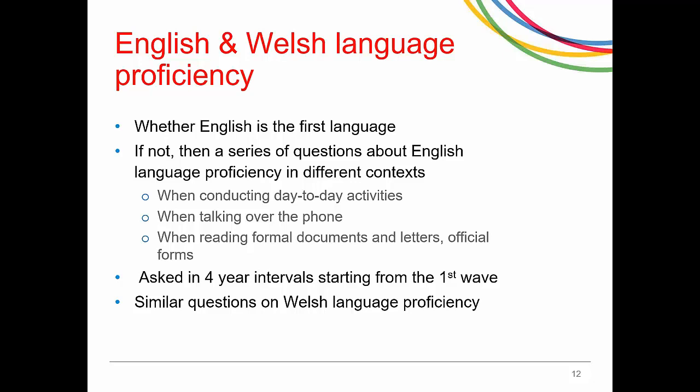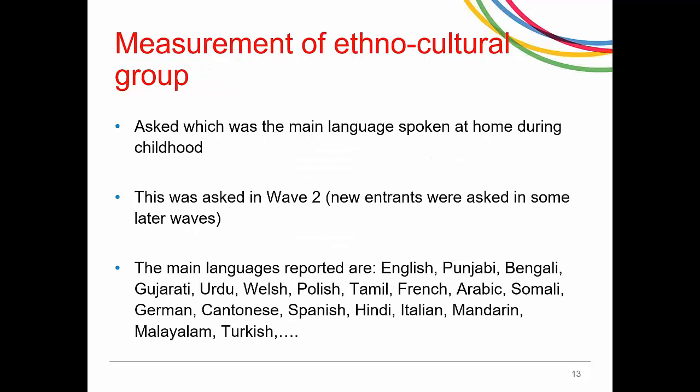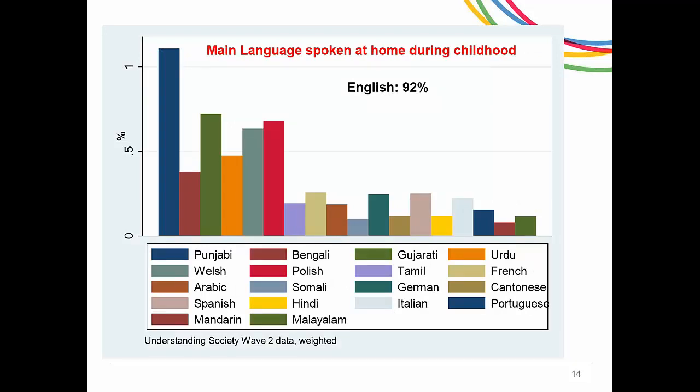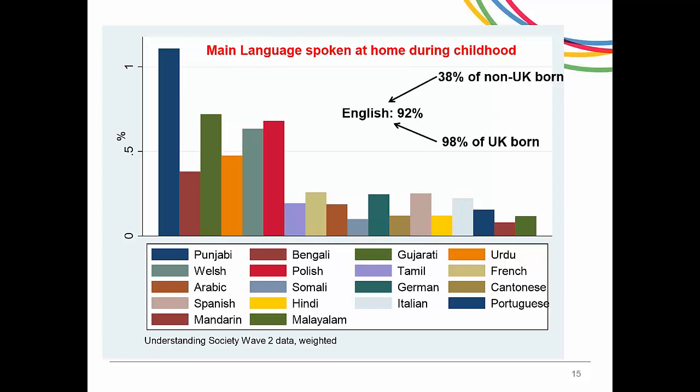Similar questions are also asked on Welsh language proficiency. The second type of questions can be used for measurement of ethno-cultural groups. In the second wave of the study, respondents were asked what was the main language spoken at home during their childhood, and they could choose from a very long list of languages. As this is something that won't change over time, it is only asked once, and after wave two, only new entrants to the survey are asked this question. As expected, 92% of respondents in wave two said that English was the main language spoken at home during their childhood. English is followed by Punjabi, Bengali, Gujarati, and so on.